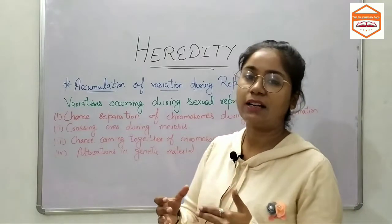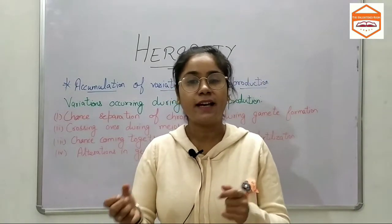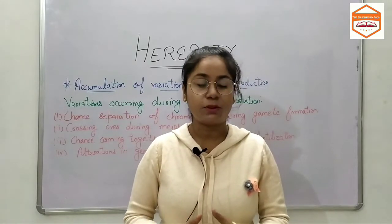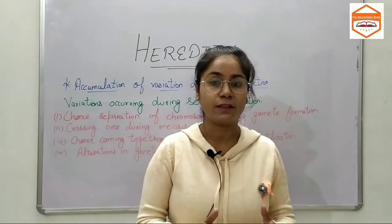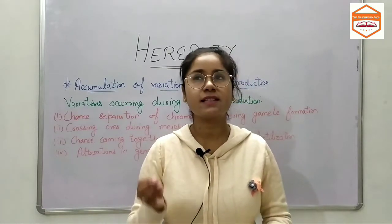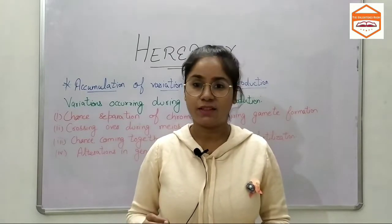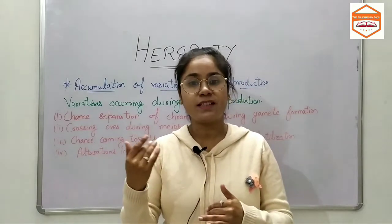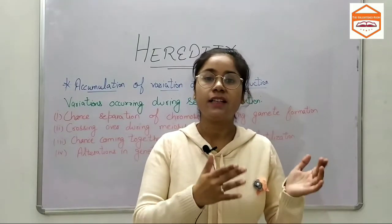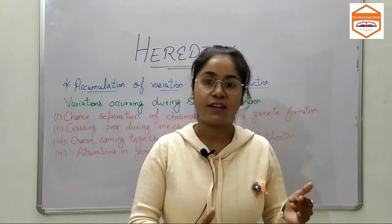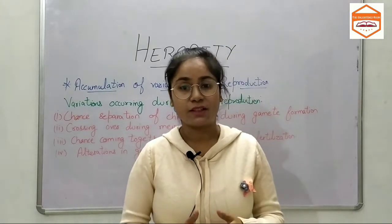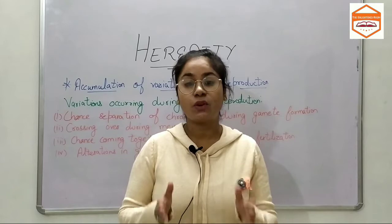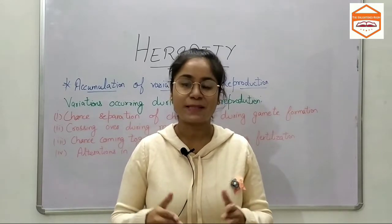All organisms do not need to have all the chances of inheritance. Some would have different chances depending upon environmental factors. For example, bacteria can survive in heat — it would not die. But there are certain germs and viruses which cannot survive in heat; they only withstand cold. So different organisms have different chances of inheritance and different chances of survival depending upon environmental factors. This is our topic: accumulation of variation during reproduction. If you want to get notified about more topics of this chapter, subscribe to my channel.